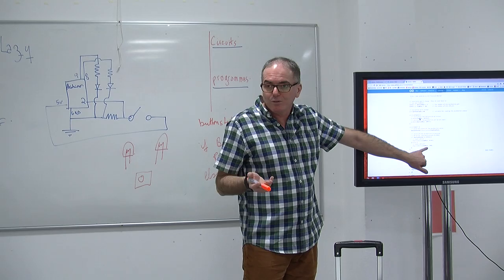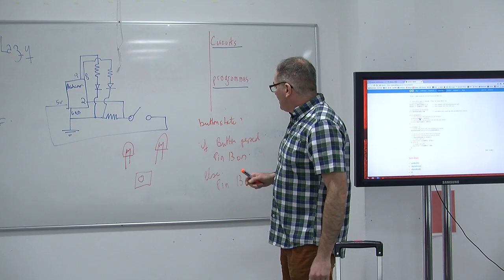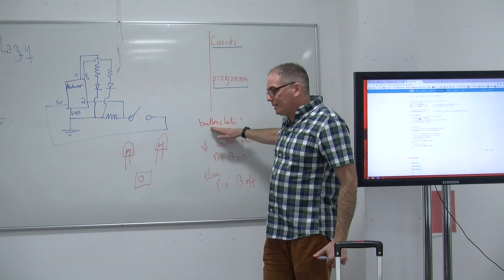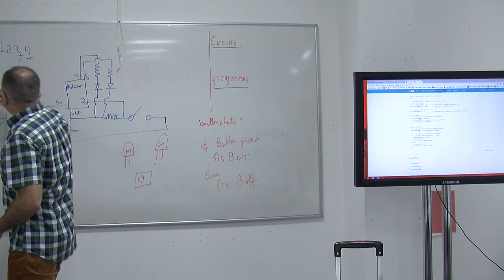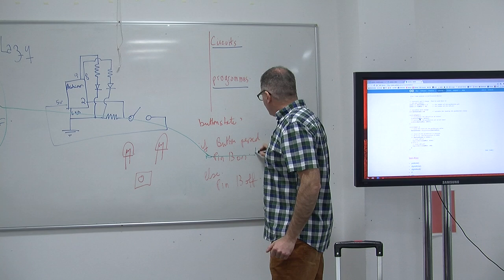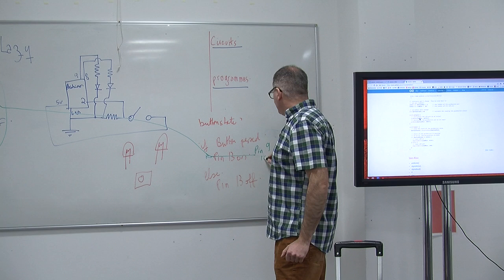So now, what we're going to do is this. We read the state of the button. If it's pressed, instead of doing that, we're going to take this and put it here. So we're going to say pin 9 on, wait a second, pin 9 off, wait a second.